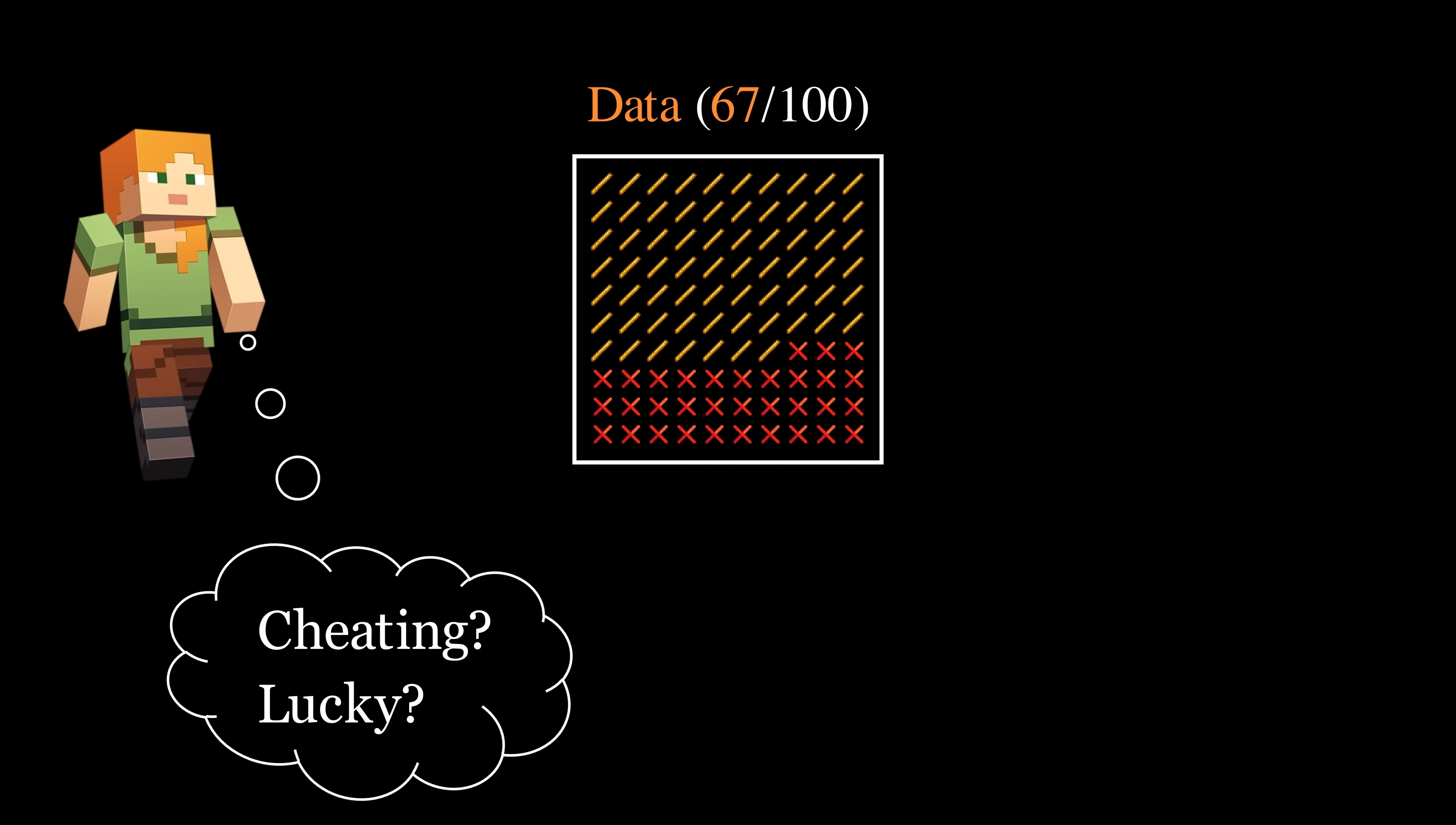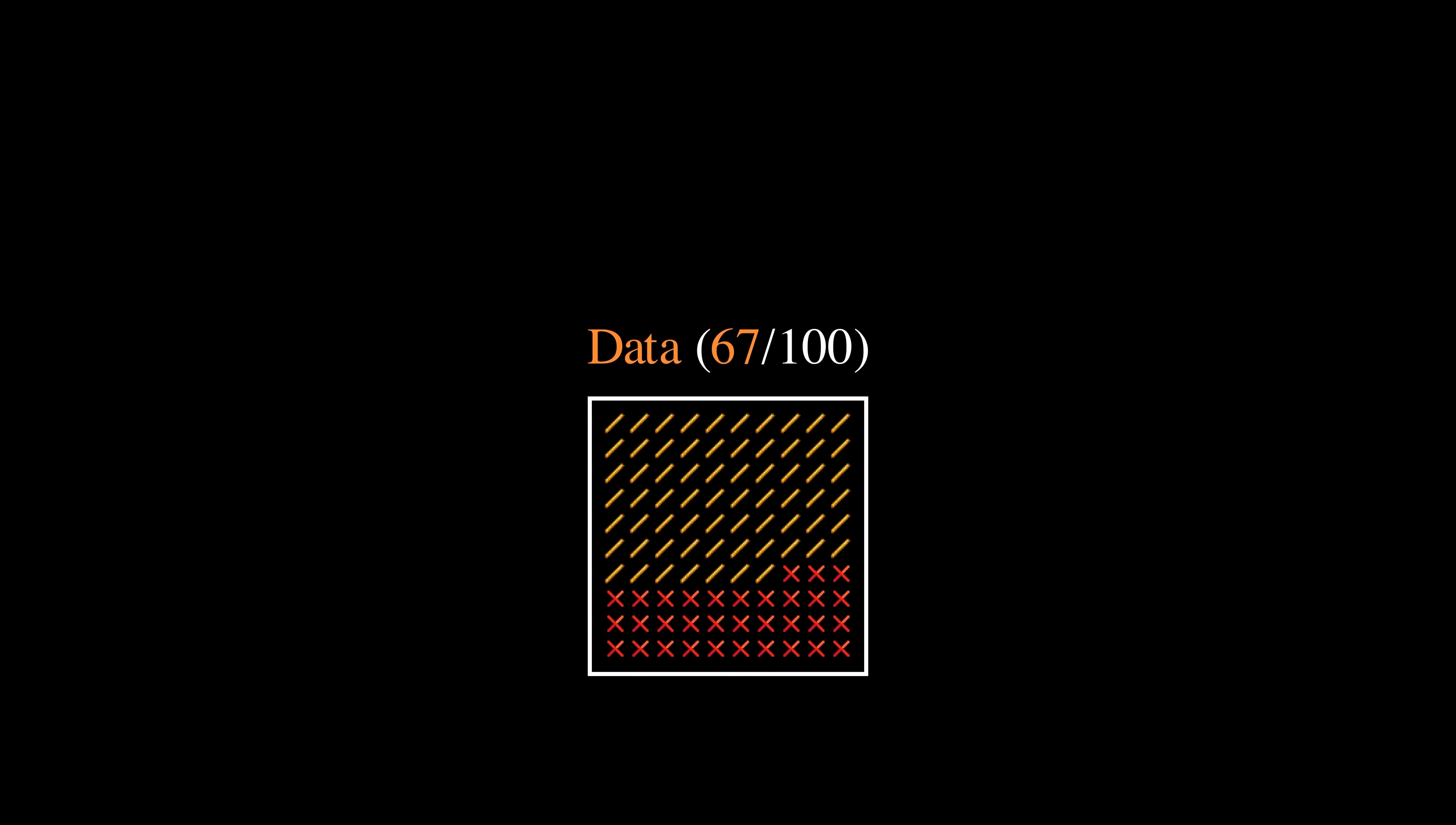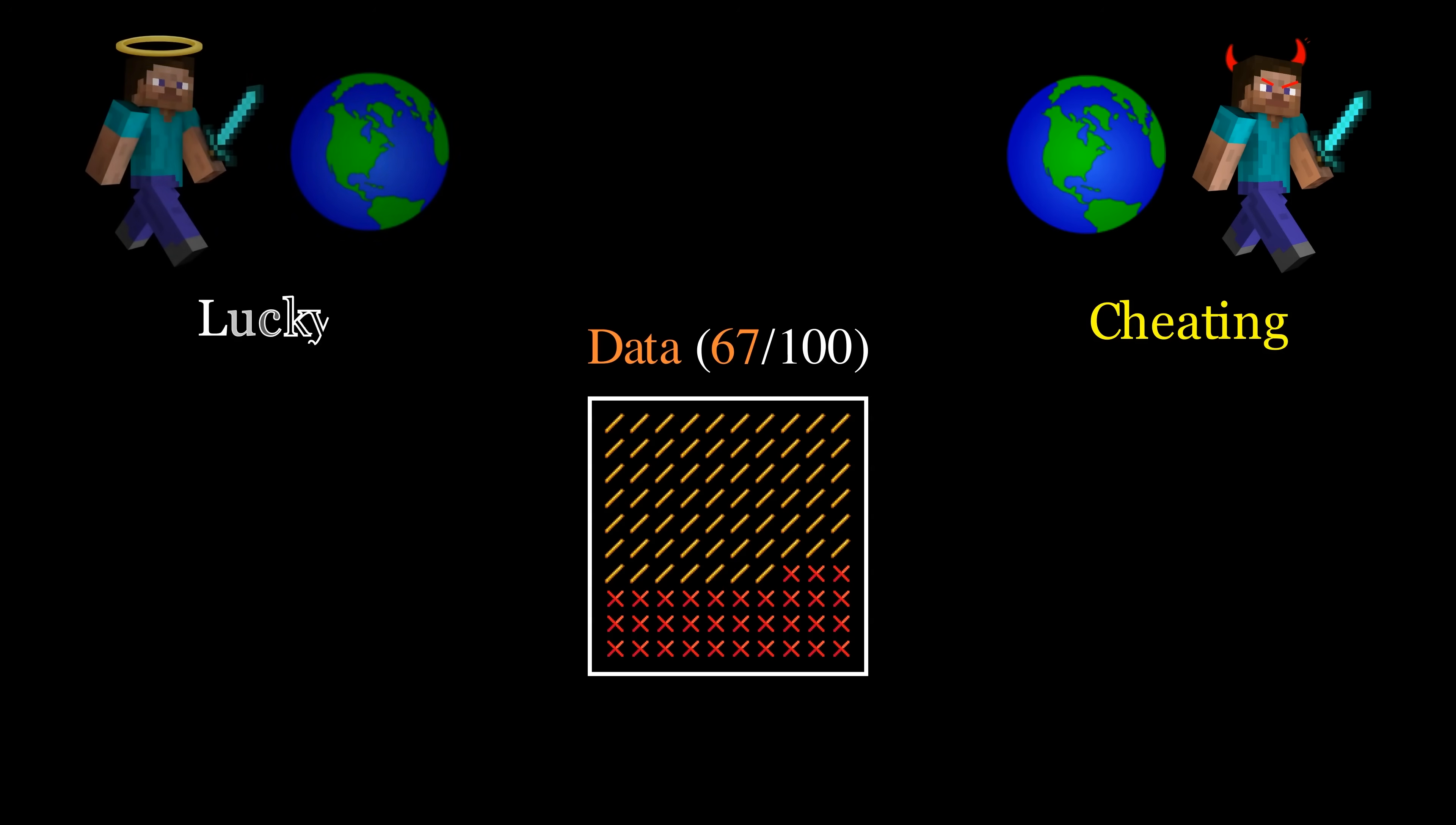First, let's think about how we can frame this question in a more mathematically precise way. There are two possible worlds that we might be living in. One in which our friend cheated, and one in which they did not and got lucky.